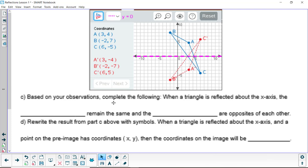So based on your observations, complete the following. When a triangle is reflected about the x-axis, the what remain the same and the what are opposites of each other.